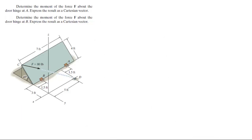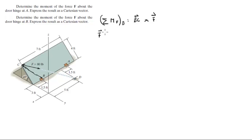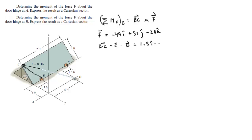Now for the second part: the moment that F creates about B is the cross product of vector BC cross F. We already found F: negative 49i plus 57j minus 28k. Vector BC equals C minus B, which comes out to be 1.5i minus 2.83j plus 2.83k.